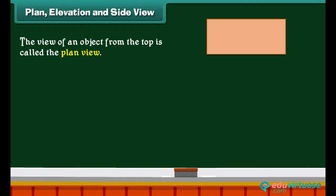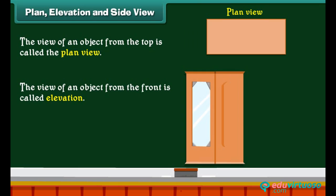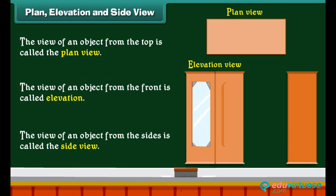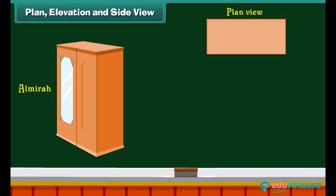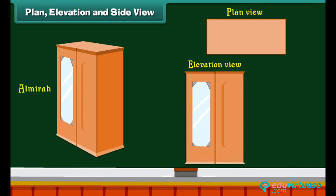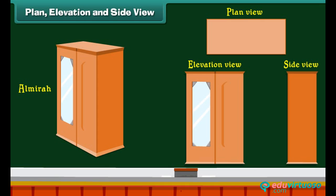Plan, elevation, and side view: The view of an object from the top is called the plan view. The view of an object from the front is called elevation. The view of an object from the side is called the side view. Look at this almirah — this is the plan view, this is the elevation view, and this is the side view of the almirah.